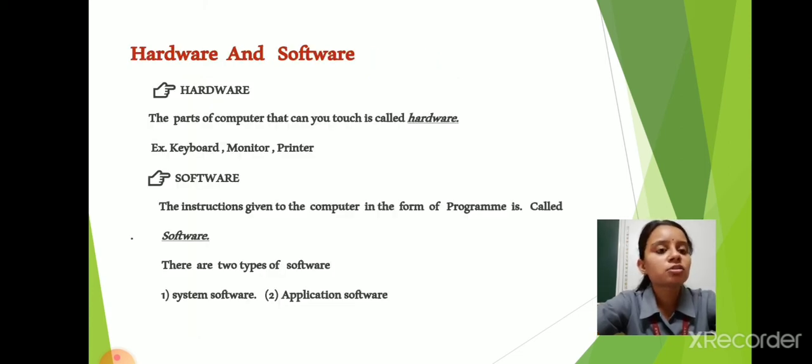Hardware and software. What is the difference between hardware and software? The computer parts you can touch are called hardware, like keyboard, mouse, printer, speaker. These are hardware that you can touch.